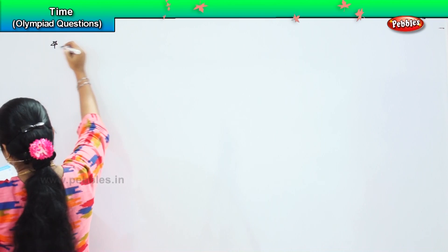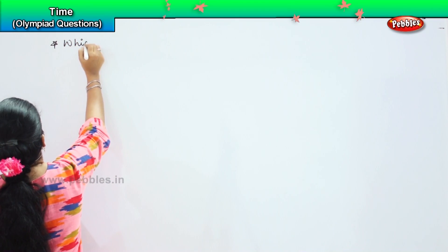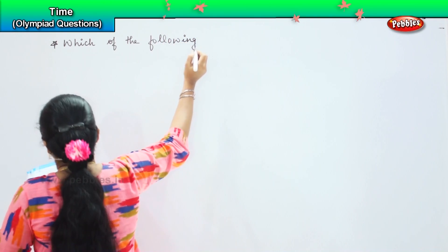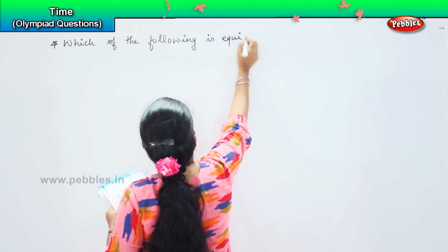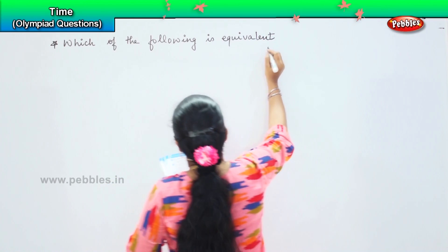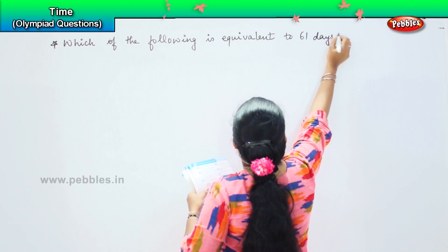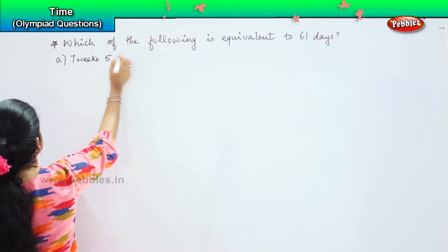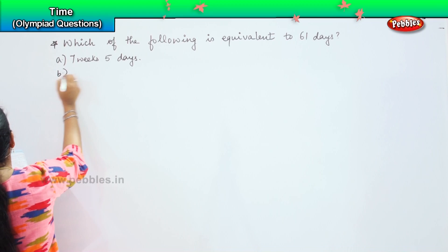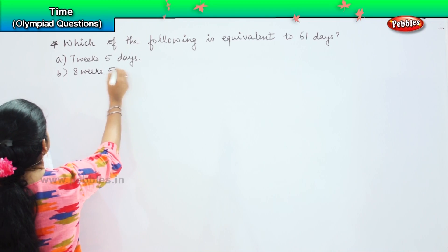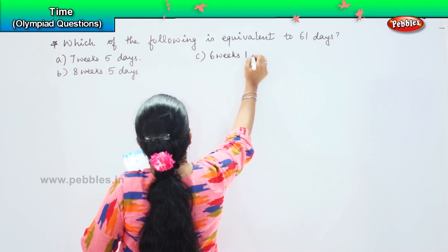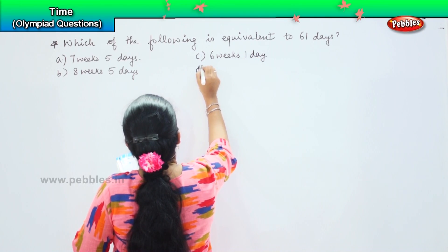Are you ready for the next sum, children? Here is your next sum. Which of the following is equivalent to 61 days? Your options are: option A, seven weeks and five days; option B, eight weeks and five days; option C, six weeks and one day; option D, eight weeks.